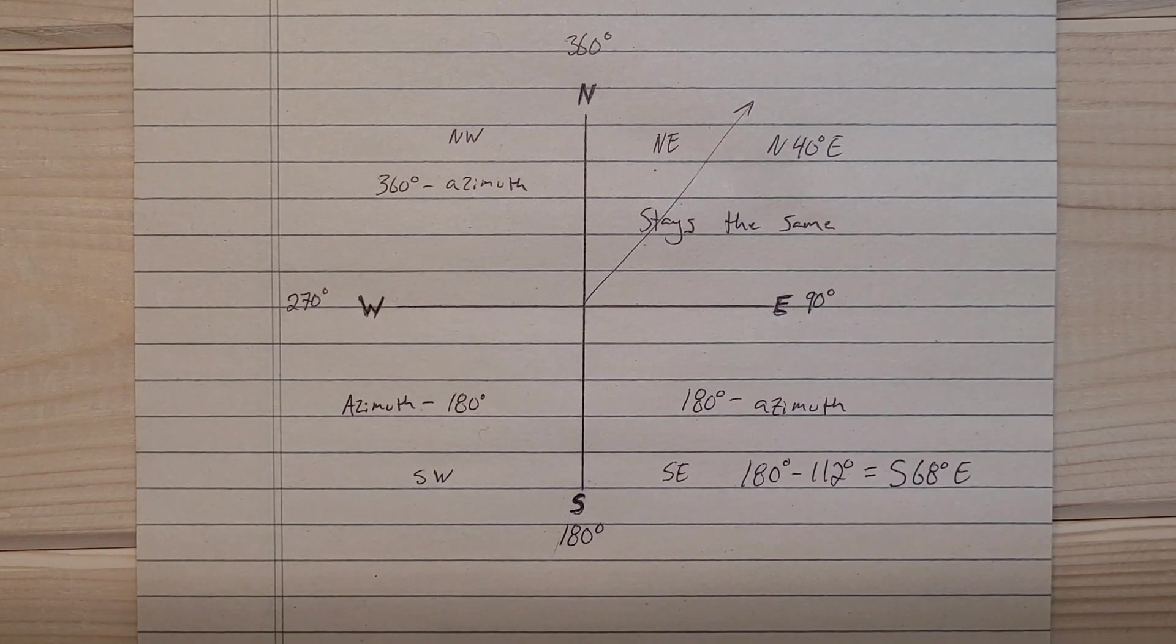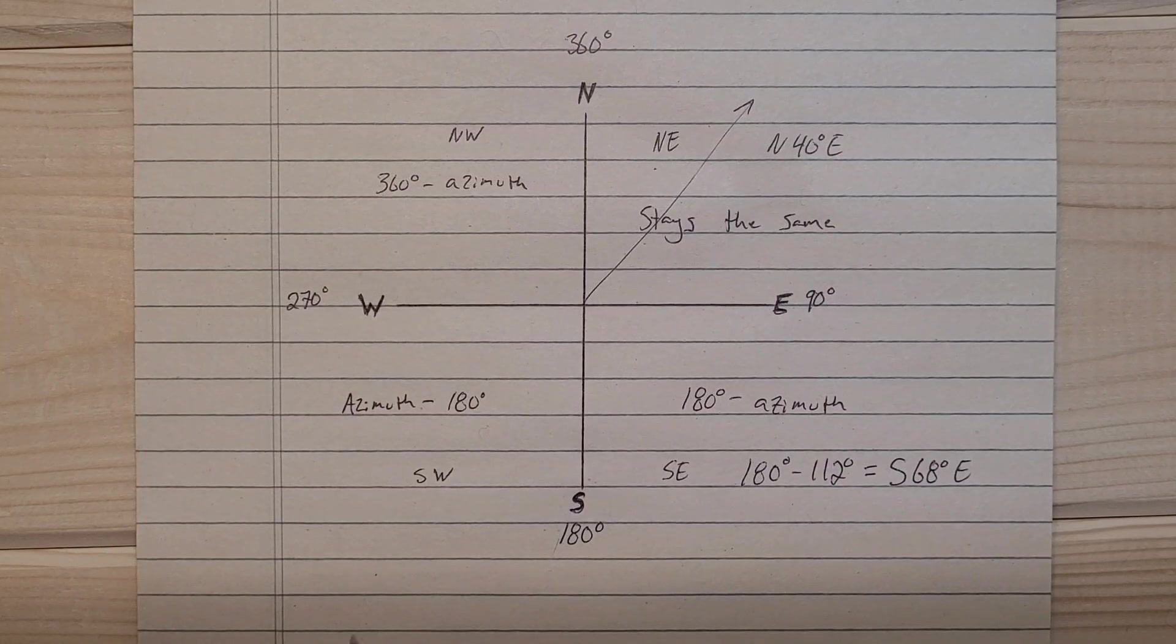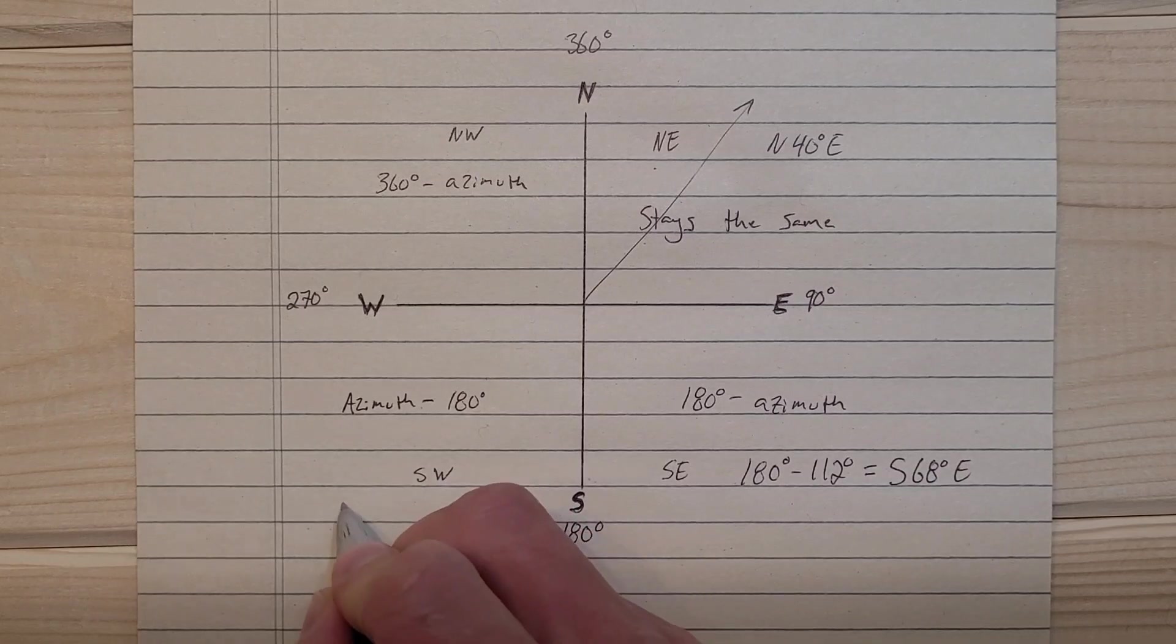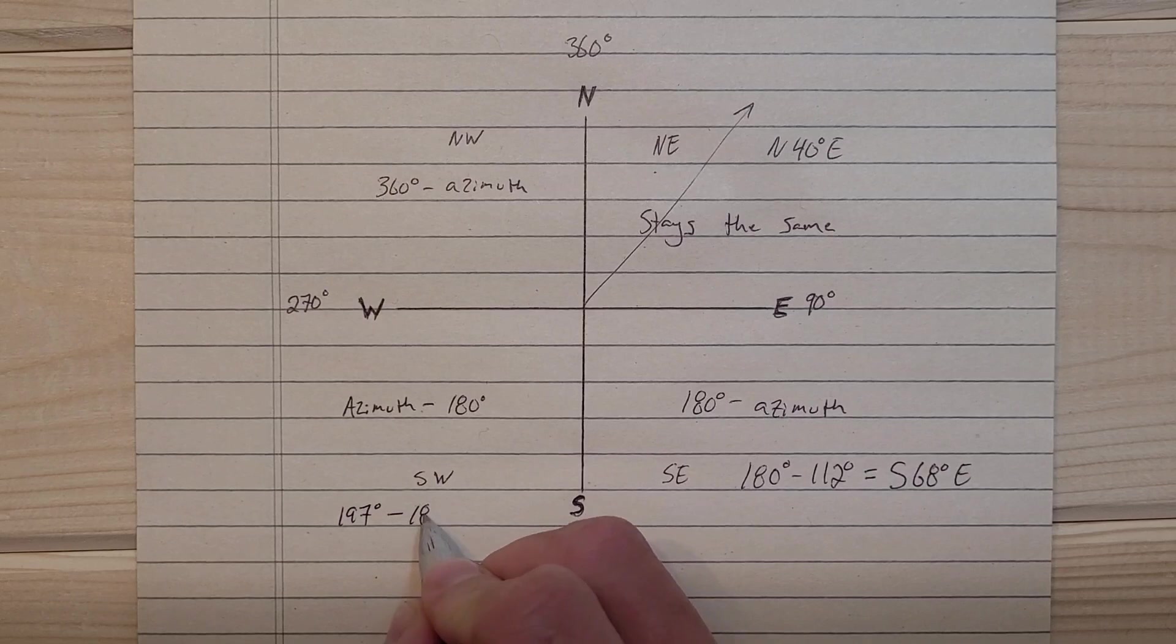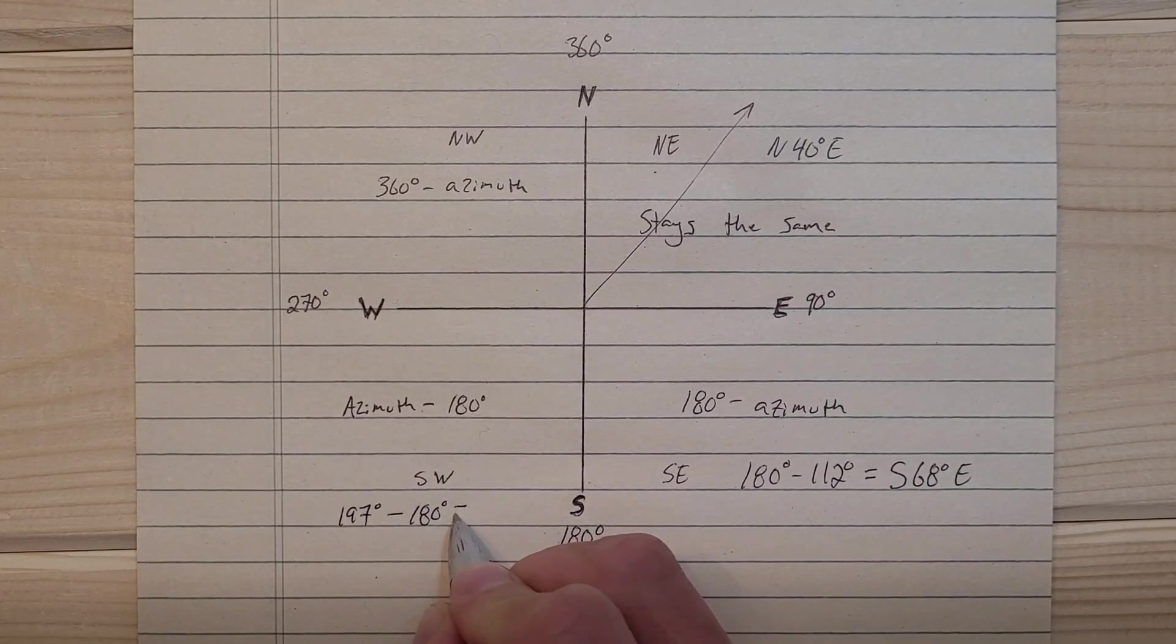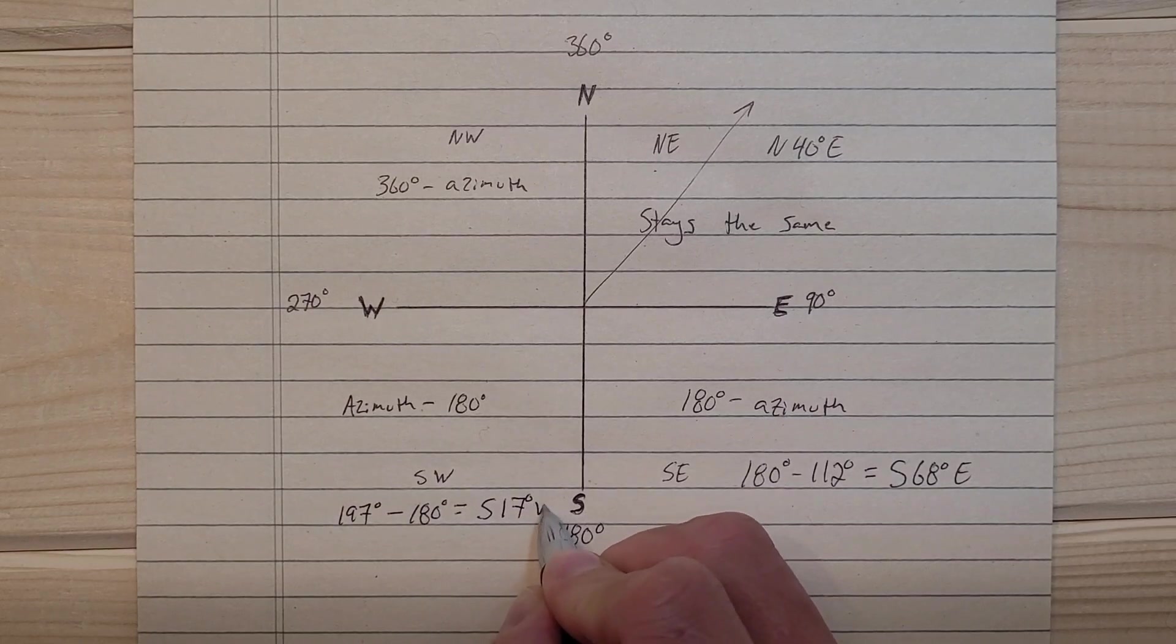If you're given an azimuth of 197 degrees, that falls in this quadrant here, so we do the azimuth 197 minus 180, and that would equal south 17 degrees west.